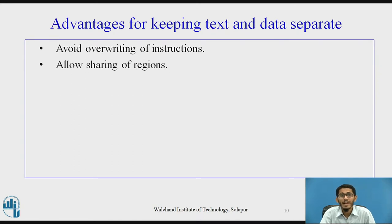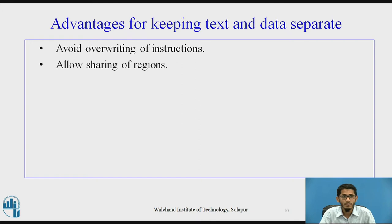Next, we see the advantages of keeping text and data separate. There are two advantages. The first: if text and data were in the same region, the system could not prevent a process from overwriting its instructions, because it would not know which addresses contain instructions and which contain data. But if text and data are in separate regions, the kernel can set up hardware protection mechanisms to prevent processes from overwriting their text space. If a process mistakenly attempts to overwrite its text space, it incurs a protection fault that typically results in termination of the process.